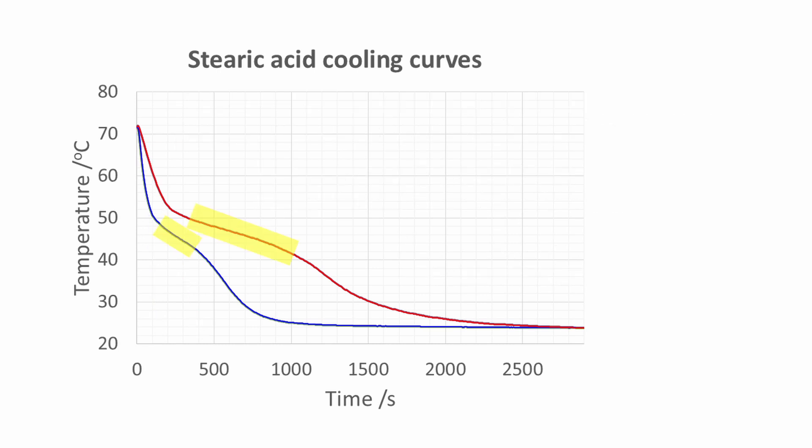The melting point of a substance can be found from the plateau of the cooling curve. This is the flattest part of the graph apart from the point at which room temperature has been reached. I have highlighted the plateaus for each cooling curve in yellow.